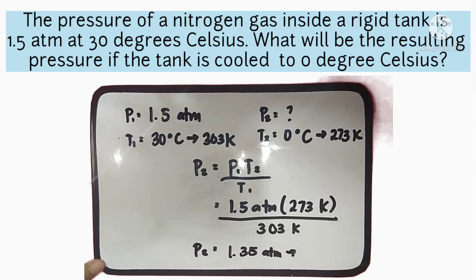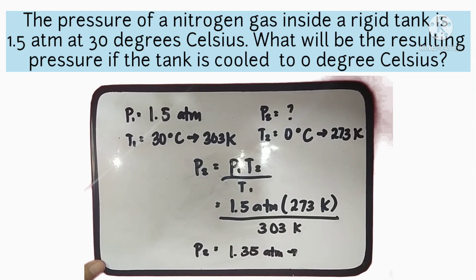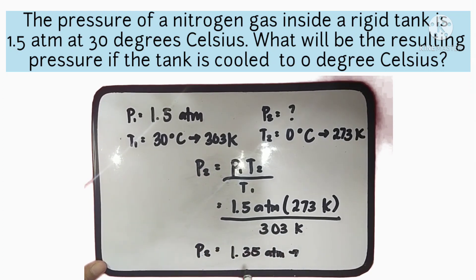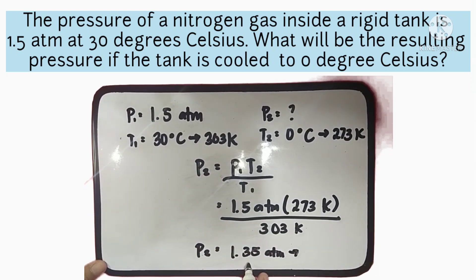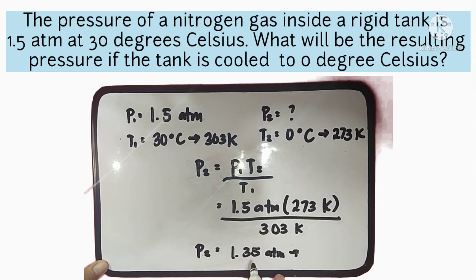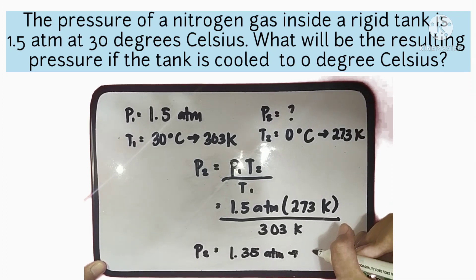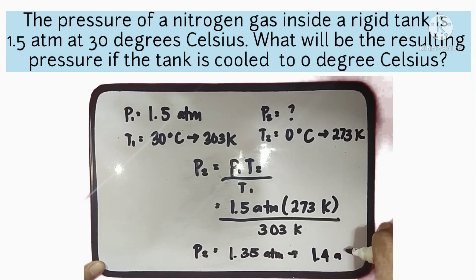Expressing your final answer into significant figures, having 1.5 has two significant figures. Therefore, your answer must be expressed having two significant figures. Therefore, our final answer will be 1.4 atm.